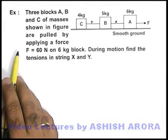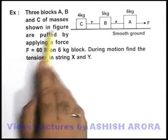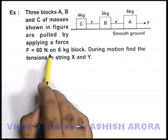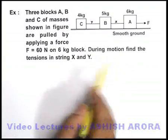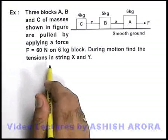Let's see another example. Here we are given three blocks A, B and C of masses shown in figure, are pulled by applying a force of 60 N on 6 kg block. We are required to find the tension in the strings X and string Y during the motion of these blocks.